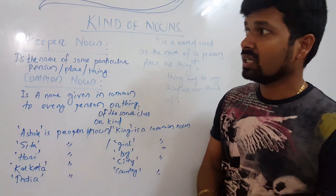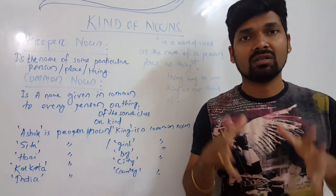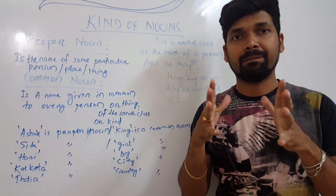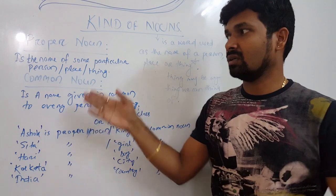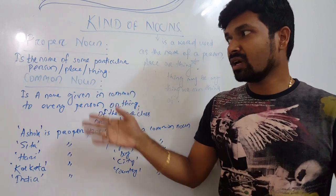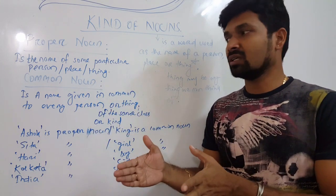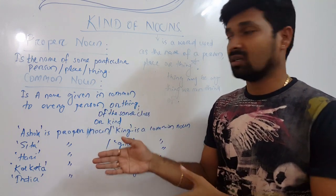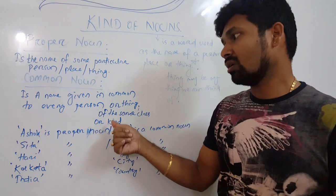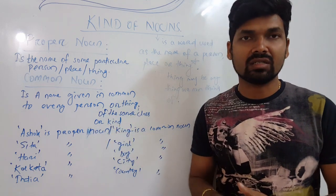A proper noun is the name of some particular place, person, or thing. A common noun is a name given in common to every person or thing of the same class or kind.